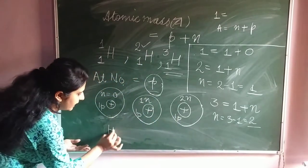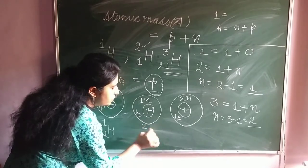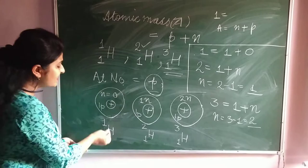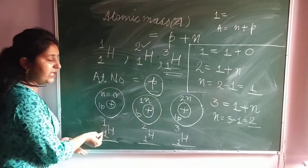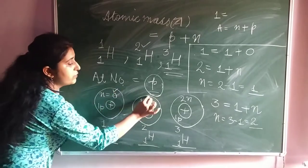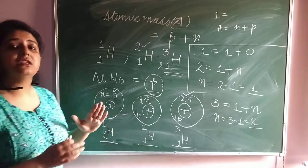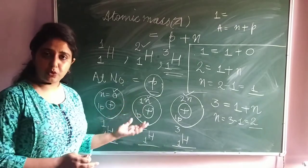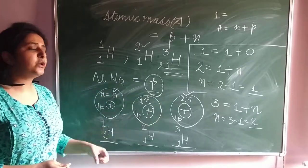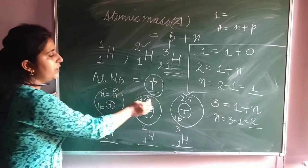So in the first case hydrogen has proton 1, neutron 0. In the second case, proton 1 and neutron 1. In the third case, proton 1 and neutron 2. The major difference between these three isotopes is that they differ by the number of neutrons only. There is no difference in their protons and no difference in the number of electrons.